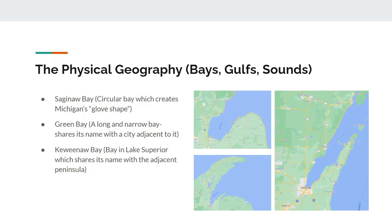Our last section for physical geography is bays, sounds, and gulfs. One very important bay in this region is the Saginaw Bay, which creates Michigan's glove shape. Green Bay is a bay you might have heard of since it shares its name with the famous football city adjacent to it. Finally, Keweenaw Bay is a bay in Lake Superior, which shares its name with the Keweenaw Peninsula mentioned earlier.